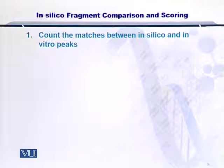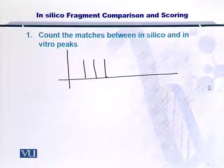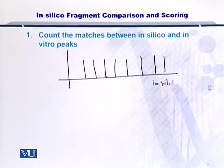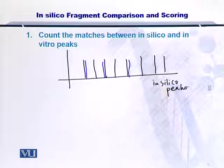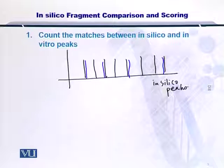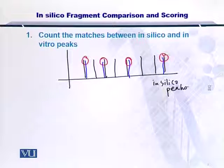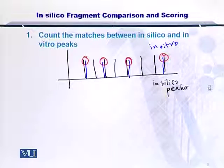First of all, you have to count the matches between the in silico and the in vitro peaks. Let me draw some in silico peaks. These are the fragments that have been generated by fragmenting a protein in the protein database and arriving at the theoretical mass of the peptides. Now, in blue, I am going to draw some peaks that have been reported in the experiment. If you simply look at it, you can count 1, 2, 3, 4 experimental peptides — call them the in vitro peptides — and they match with the in silico peaks.